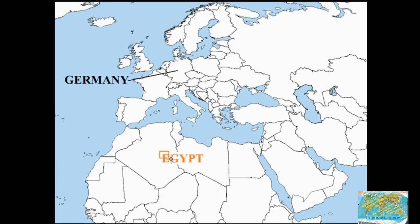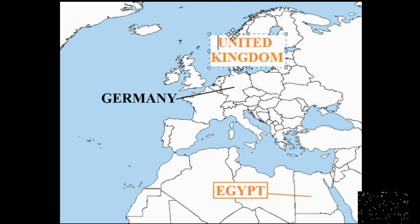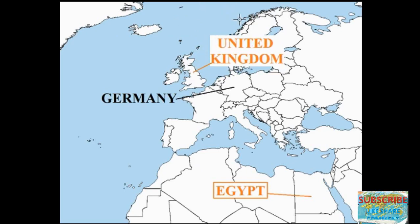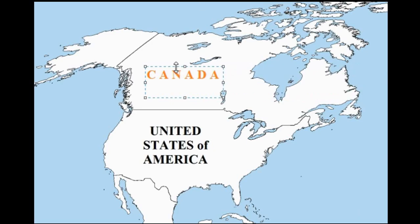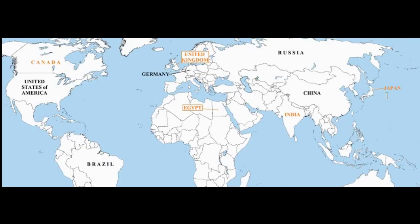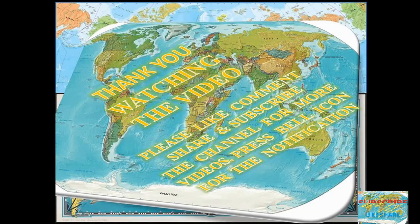Egypt — a country of Africa, whose boundary makes an L-shape in Africa. United Kingdom — a country of Europe. Canada — a country above the USA, and it is the largest country in North America. So cotton textile centers are: Japan, India, United Kingdom, Egypt, and Canada.